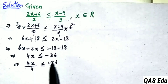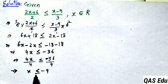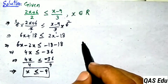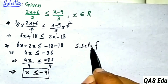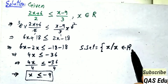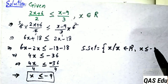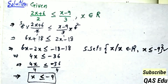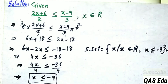Dividing both sides by 4: x is less than or equal to minus 9. The statement is that x must be less than or equal to minus 9. Since x belongs to real numbers, the solution set in set-builder notation is {x | x belongs to real numbers, x ≤ -9}. This is the solution set for this inequality given the restriction.